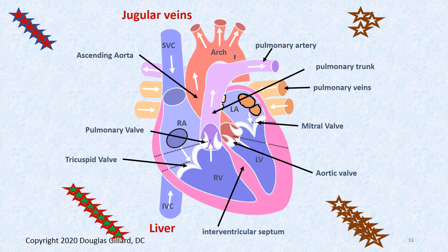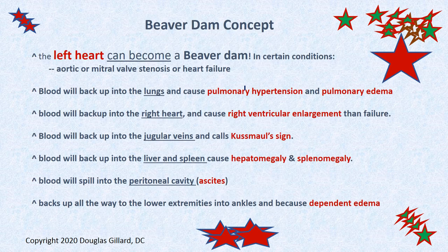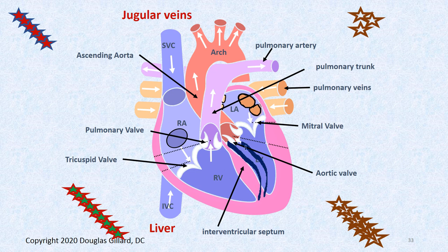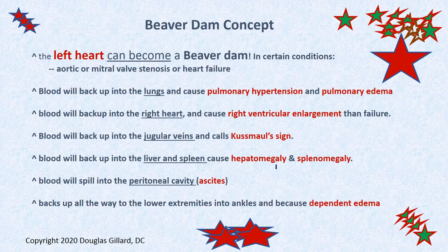There's an isthmus and then down the descending aorta. The interventricular septum separates the right ventricle from the left ventricle — it's movable. If you overfill the right ventricle, this septum can shift, especially during inspiration, and decrease the filling capacity of the left ventricle. The beaver dam concept can apply to the heart.